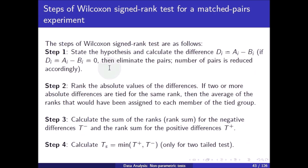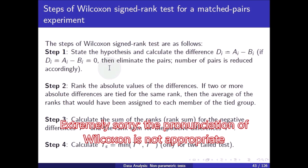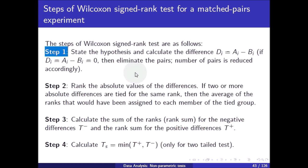The steps of the Wilcoxon Signed Rank test are as follows. Step 1: State the hypothesis and calculate the difference d_i = a_i minus b_i. If d_i equals 0 then eliminate those pairs; the number of pairs is reduced accordingly.